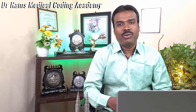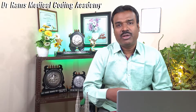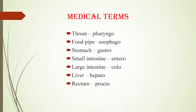Let's review the medical terms. The oral cavity is oro or bucco, lips as chilo, and the opening as stoma. Pharynx is pharyngo, the food pipe as esophago, the stomach as gastro, the small intestine as entero, the large intestine as colo, and the rectum as procto. The liver is hepato and the gallbladder is cholecysto.